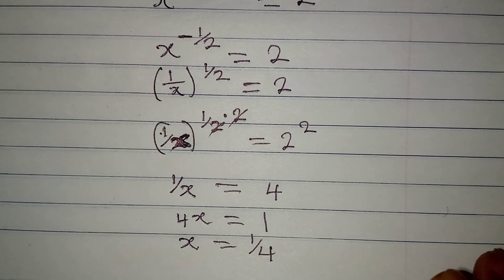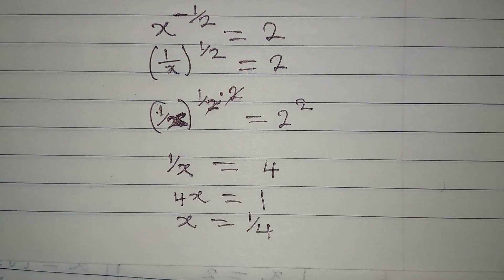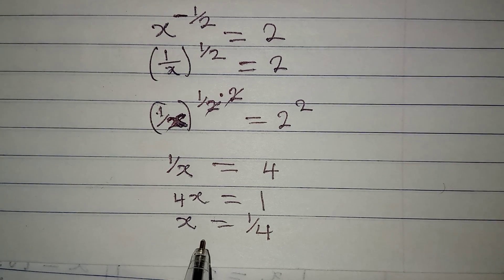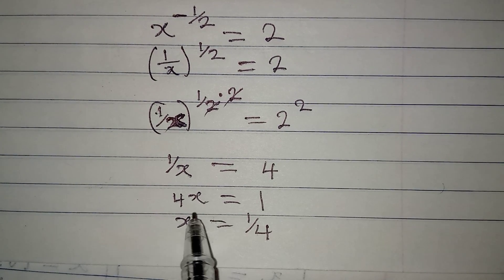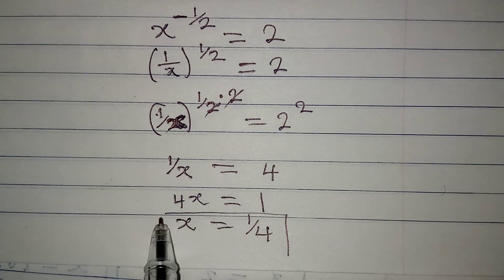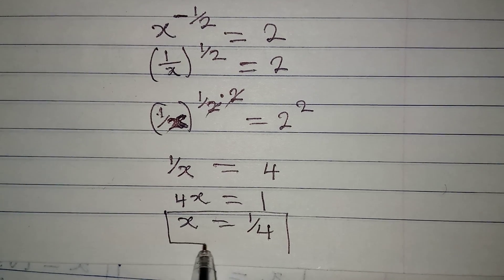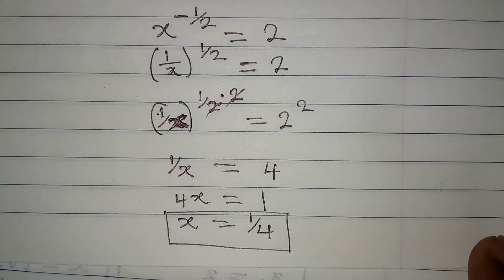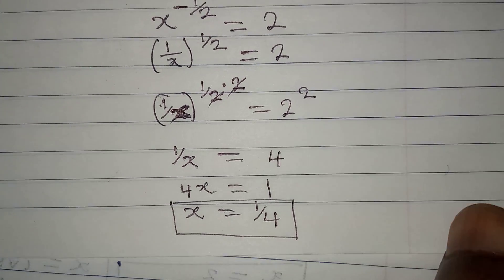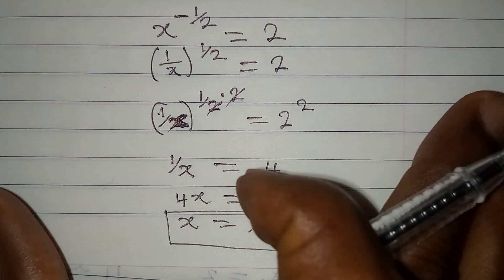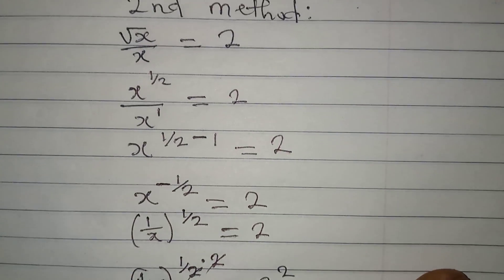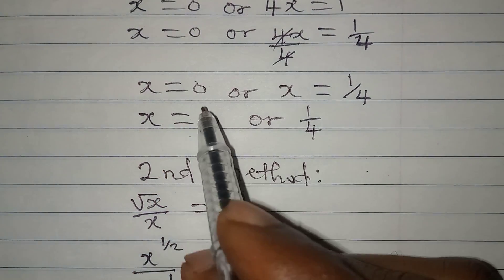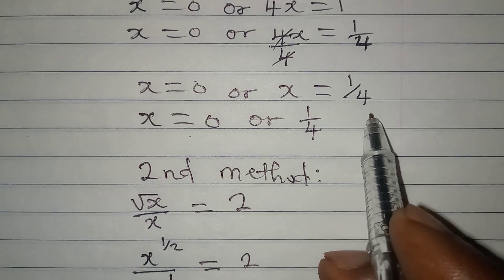Observe something right away: using the second method, we had only one value for x, which is 1 over 4. But using the first method, we got two values for x — 0 and 1 over 4. The question is, which of these methods is more effective?